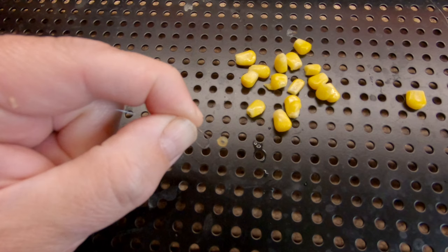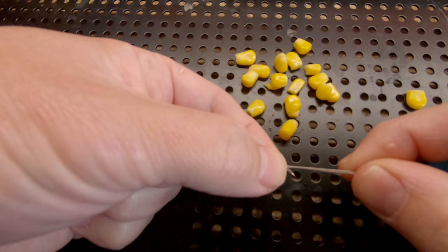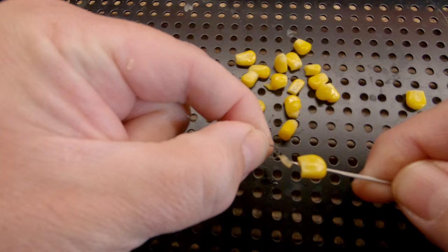Now onto the fun stuff, how to hook the corn itself. Select your grain of corn and insert a gated baiting needle into the shiny end and out through the opening where it's come off the kernel.